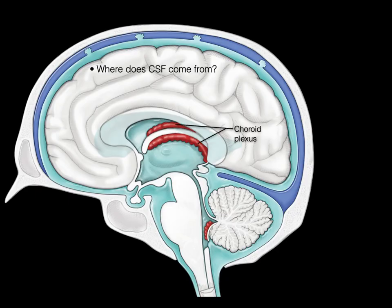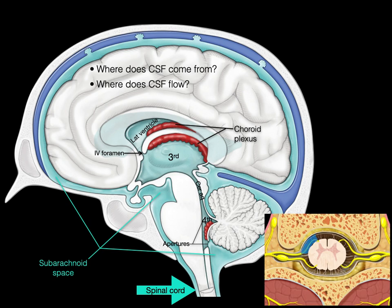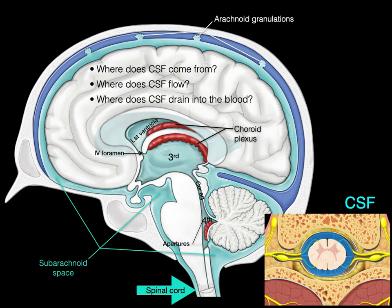Where does CSF come from? The choroid plexuses. Where does CSF flow? From the lateral ventricles through the interventricular foramen, then third ventricle, cerebral aqueduct, fourth ventricle, and through those apertures into the subarachnoid space. Not to forget that the subarachnoid space also flows around the spinal cord — when we look at a cross-section through the spinal cord, the spinal cord is also floating in CSF. Where does CSF drain into the blood? The arachnoid granulations drain CSF into the superior sagittal sinus.